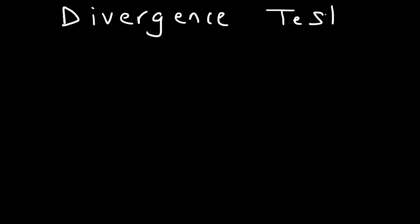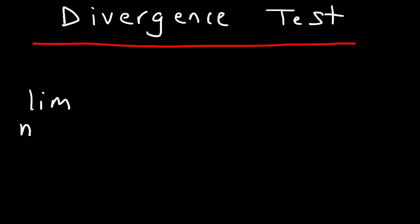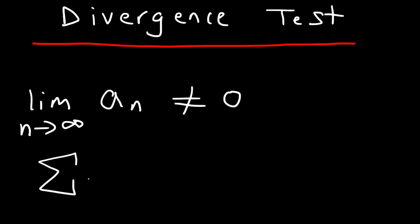In this video I'm going to give you a review of the different tests that you need to know in order to determine if a series is going to converge or if it's going to diverge. The first test we're going to talk about is the divergence test. What you need to do is take the limit as n approaches infinity of the sequence a sub n. If this limit does not equal zero — say if it equals 5, one half, or infinity — then the series diverges. If it equals zero, the series may converge or may diverge, and you need to use another test.